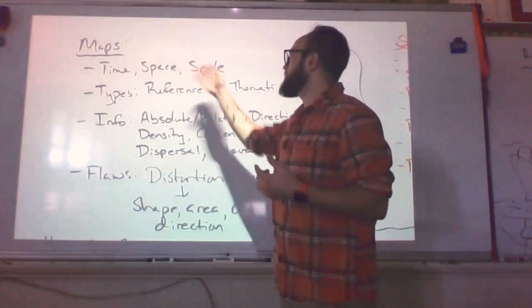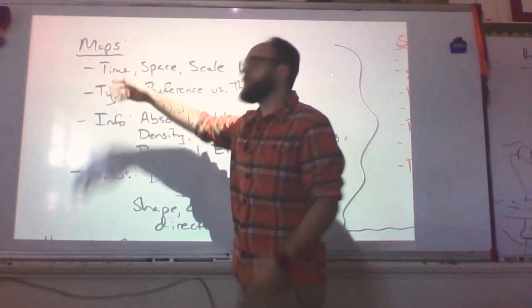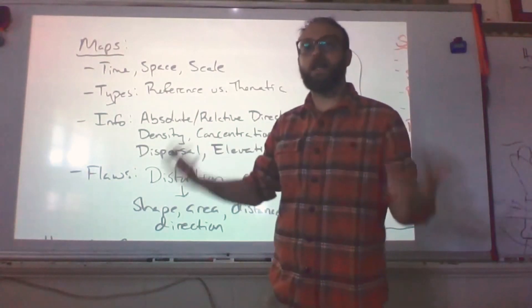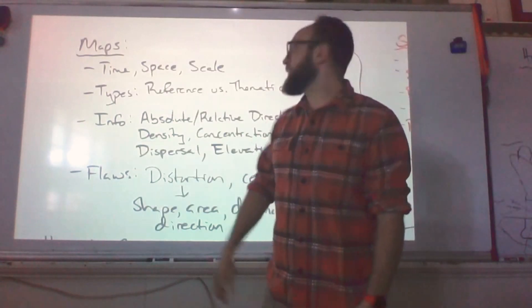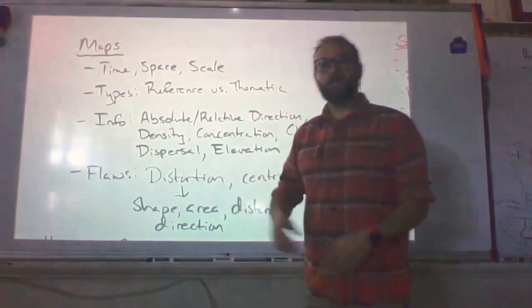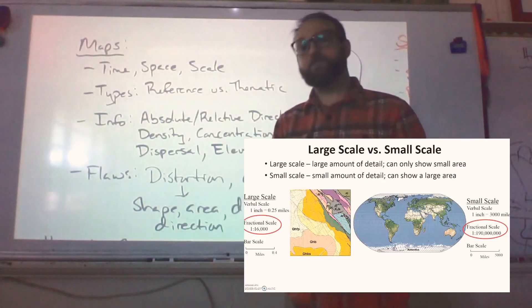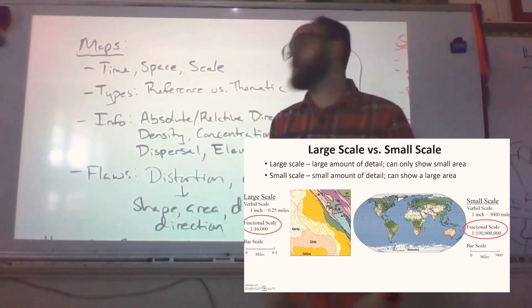Maps will consider time, space, and scale. Obviously, this is a way to measure what's happening when, which is before the other. Space would be things relative to other things and how we use and allocate our resources and physical area. And then finally, scale would be the amount to which we are zoomed in or zoomed out. If we're super zoomed out, that would be small scale. If we're super zoomed in, that would be big scale.